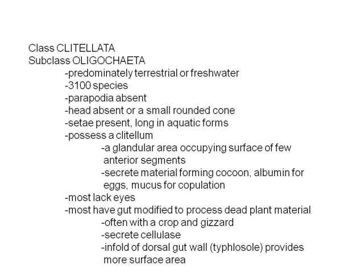A key characteristic of oligochaetes is the clitellum, which as we've discussed is the glandular area that plays a role in reproduction. Most members of this group are hermaphroditic, as seen in the dissection. Most oligochaetes are also adapted for feeding on dead organic matter and they have a gut that's modified to do so.